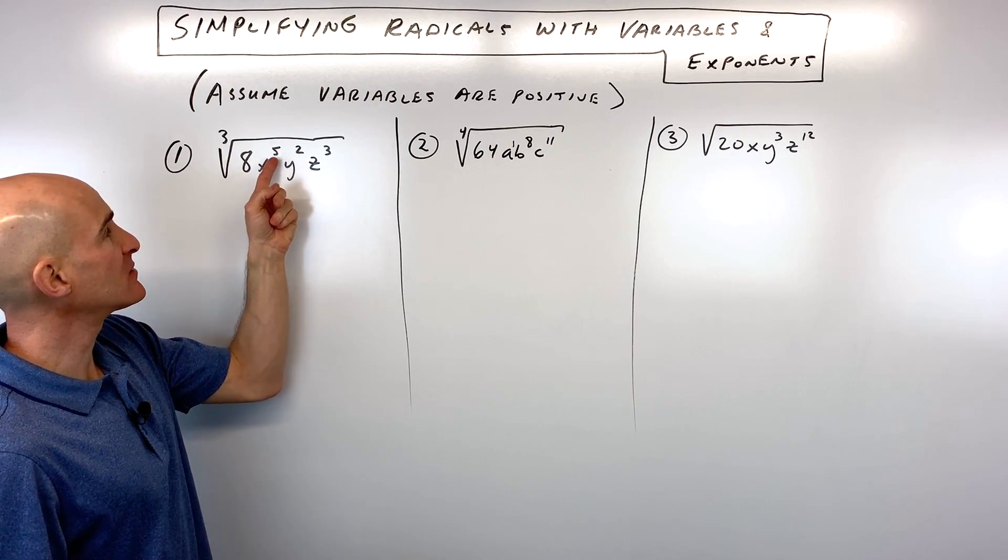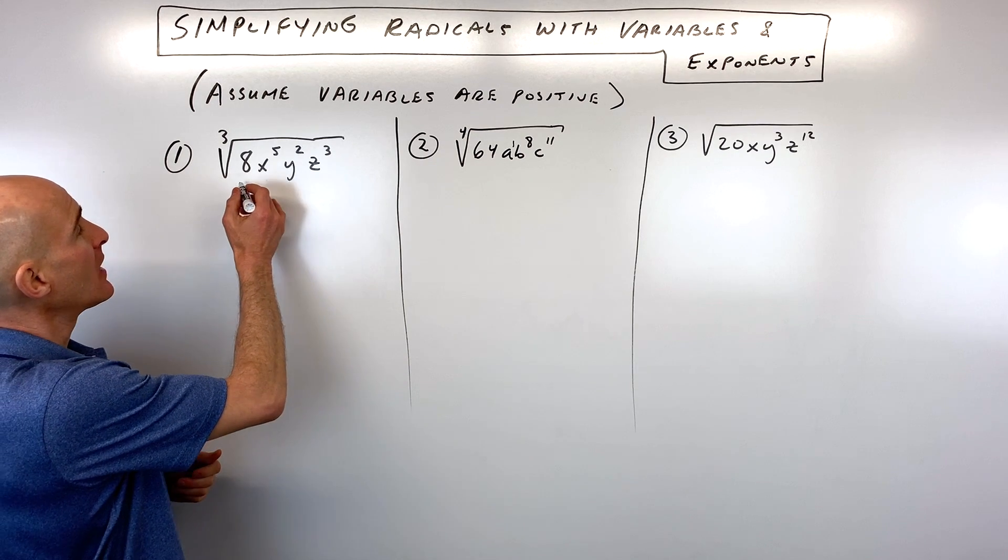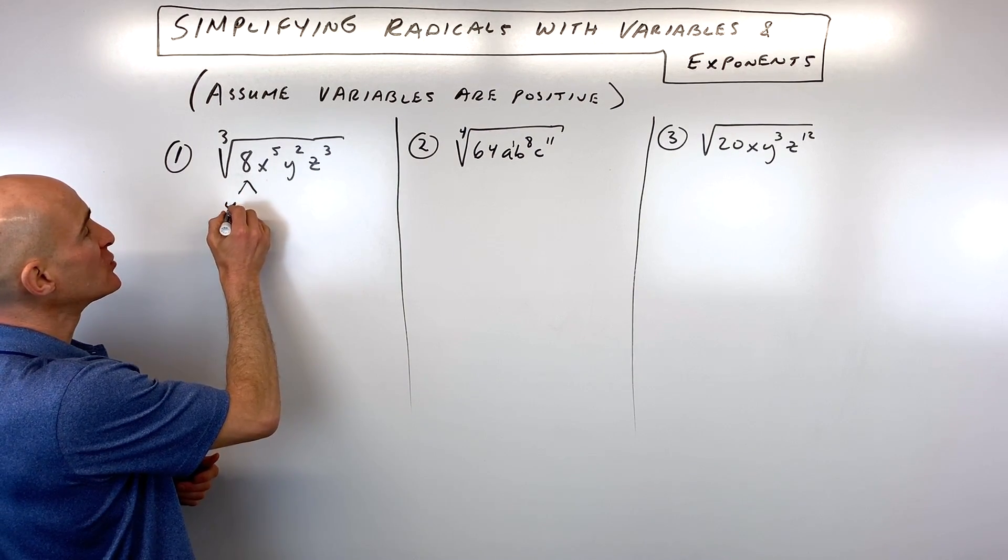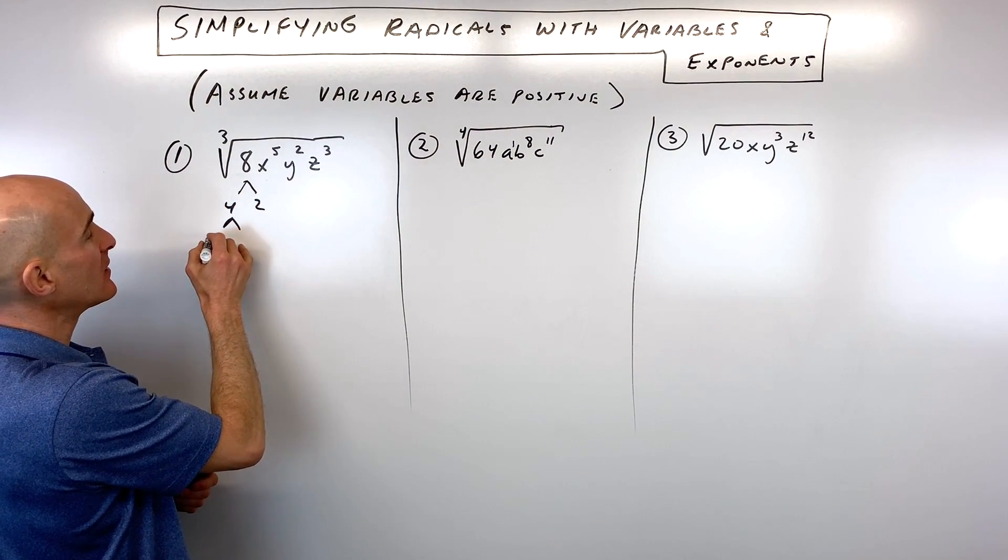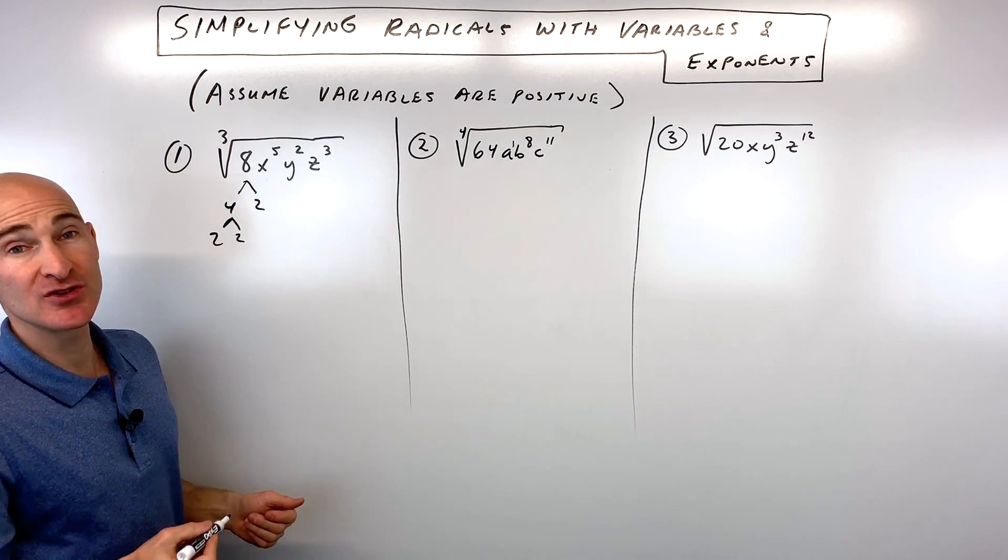This is the cube root of 8x to the fifth y squared z cubed. So what you can think about this is, go ahead and break down the number into its prime factors. I'm just going to make a factor tree here. You can see that 8 is made up of 2 times 2 times 2.